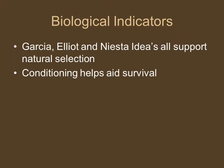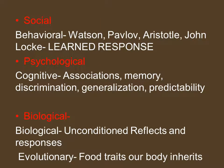Garcia's, Elliott's, and Nista's ideas all support natural selection — where conditioning helps aid survival. Not only are we learning specific traits, but we're also biologically predisposed to select certain traits. The biopsychosocial model also influences learning: the social dimension is where the behavioral falls — Watson, Pavlov, Aristotle, and John Locke all believe we learn through experiences. The psychological dimension includes memory, associations, discrimination, generalization, and predictability. The biological dimension includes natural reflexes that get trained, food traits, and inherited responses to specific colors. All of these work together to influence learning.